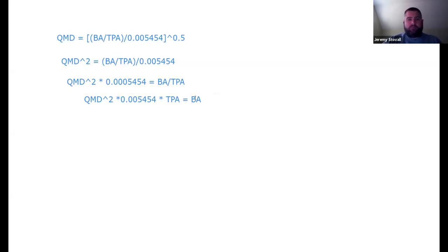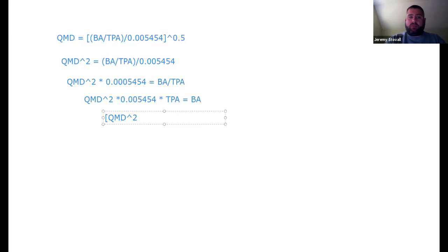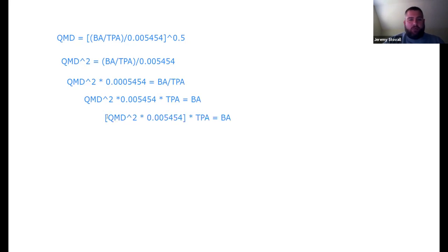For other lines, I'm going to need trees per acre, so I'll solve that equation for trees per acre. Because of the commutative property of multiplication, I can put brackets anywhere. I'll define X as the bracketed quantity: QMD² × 0.005454. That makes the equation simply X × TPA = basal area.